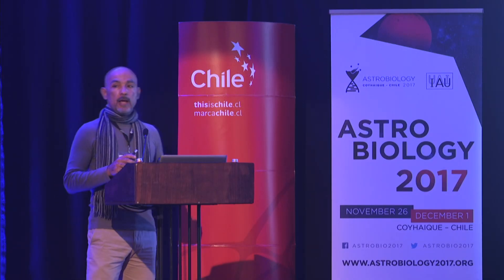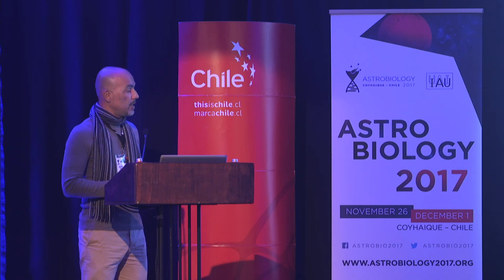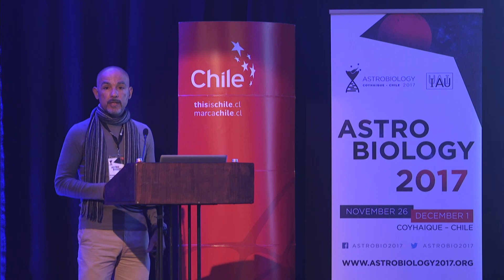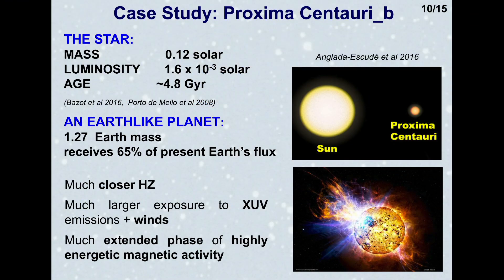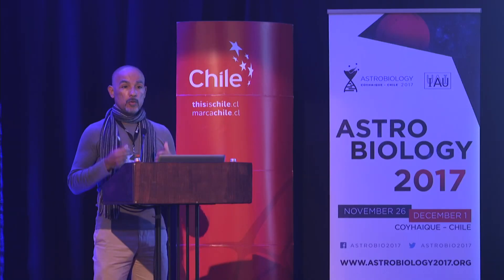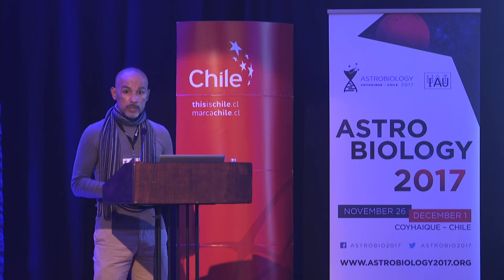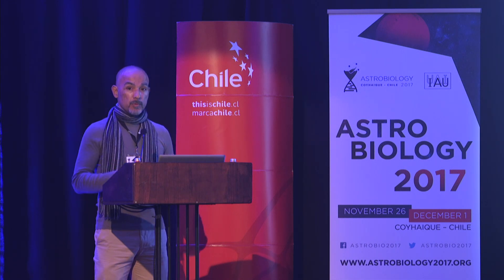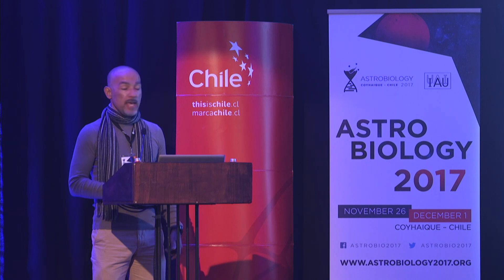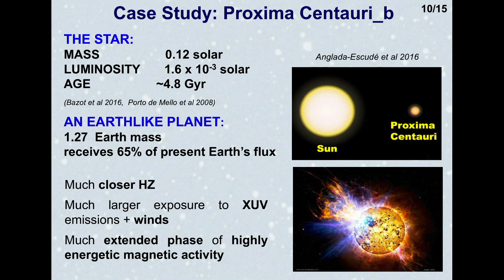Our first case study is the famous Proxima Centauri — the nearest star to our solar system. A recent discovery found an Earth-like planet in its habitable zone, receiving about 65% of the radiation Earth receives from the Sun. The star is very low luminosity and very low mass, and data suggest it's about the same age as the Sun. But its habitable zone is much closer, so the planet is exposed to much larger X-ray and extreme UV fluxes and winds, and this high-energy phase is also much more extended than in the case of Earth.